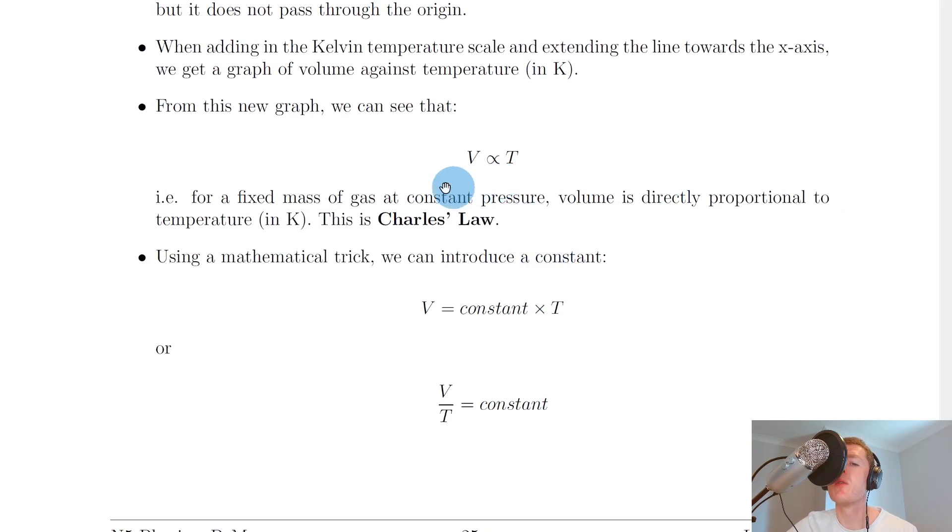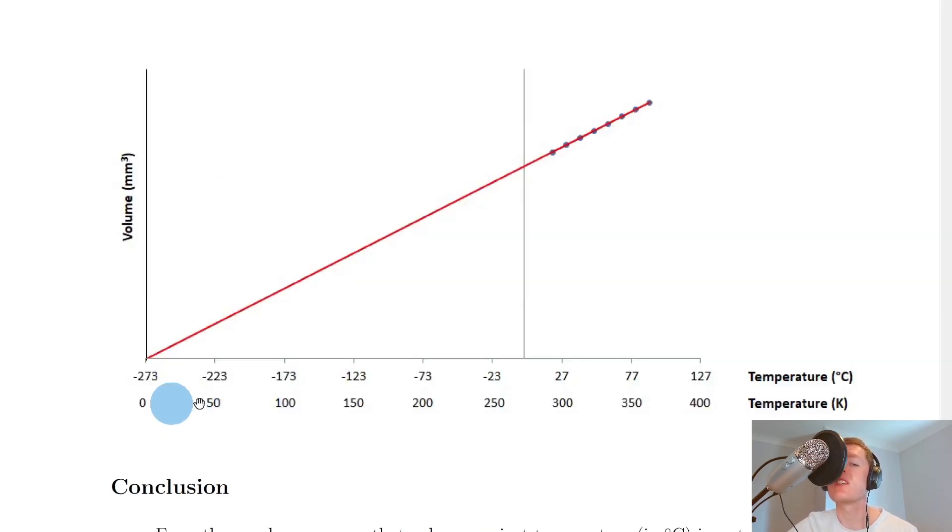We can conclude that in symbol form, volume is directly proportional to temperature, or in other words as temperature in kelvin goes up the volume also goes up, or as temperature in kelvin goes down the volume also goes down. The same thing happens to both variables at the same rate.